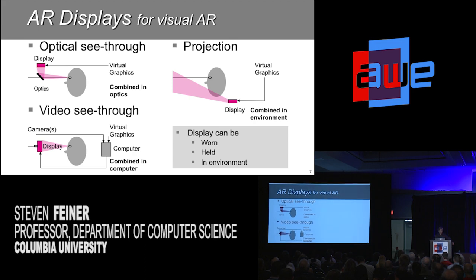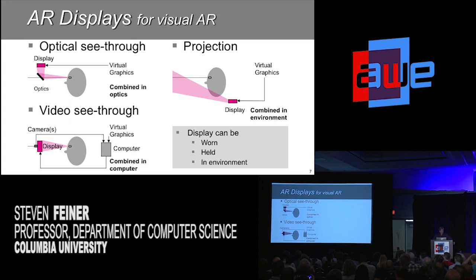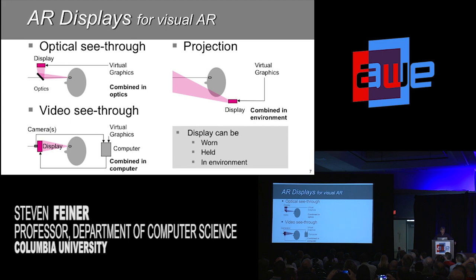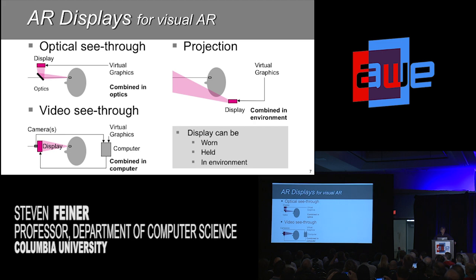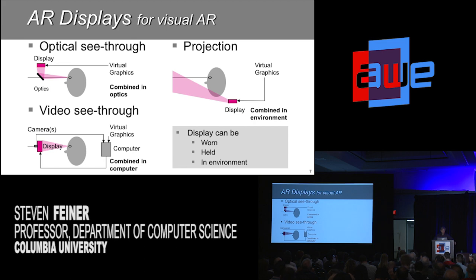You also have video see-through: one or more — nowadays typically two — cameras whose images are combined together in the computer with the virtual graphics you'd like to add. And as we know, there are wonderful things we can do nowadays in real time to make sure that we see just the camera image at a pixel, or just the virtual stuff, or some really cool combination. Pretty much anything we'd like — the sky's the limit because it's all done with computer graphics and fast hardware.